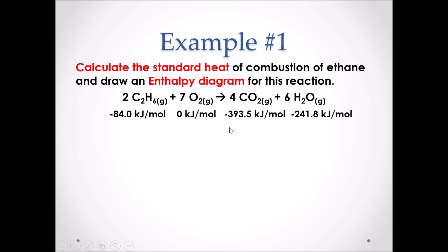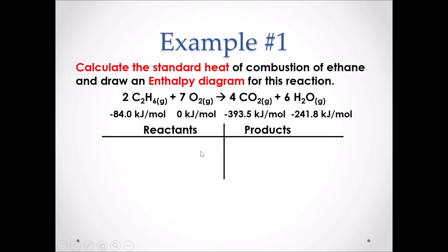Using the Chemistry 30 data booklet to find the molar heat of formation of each substance: ethane is negative 84.0 kJ/mol; O₂ is an element so it gets a value of zero; CO₂ gas is negative 393.5 kJ/mol; and H₂O gas is negative 241.8 kJ/mol. Don't forget to use the value for water vapor, not liquid water. We can now find the sum of the heats of formation of the reactants and the products.